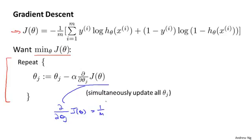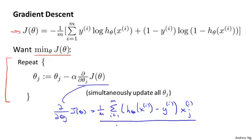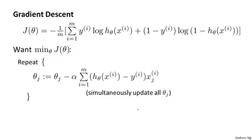If you actually compute this, what you get is this equation, and I'll just write it out here: it's the sum from i equals 1 through m of essentially the error times xij. So if you take this partial derivative term and plug it back in here, we can then write out our gradient descent algorithm as follows. And all I've done is I took the derivative term from the previous slide and plugged it in there.